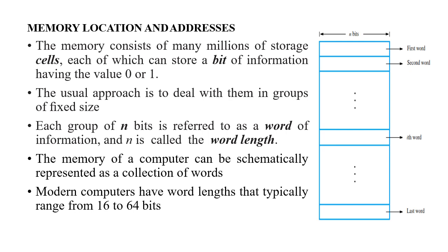The number of bits in that group represents the word length. The memory of a computer can be schematically represented as a collection of words. In this particular diagram, we have represented a first word, second word, eighth word, and last word. Each word will have one address, using which the memory is accessed. Each group of words will have one address based on the word length.